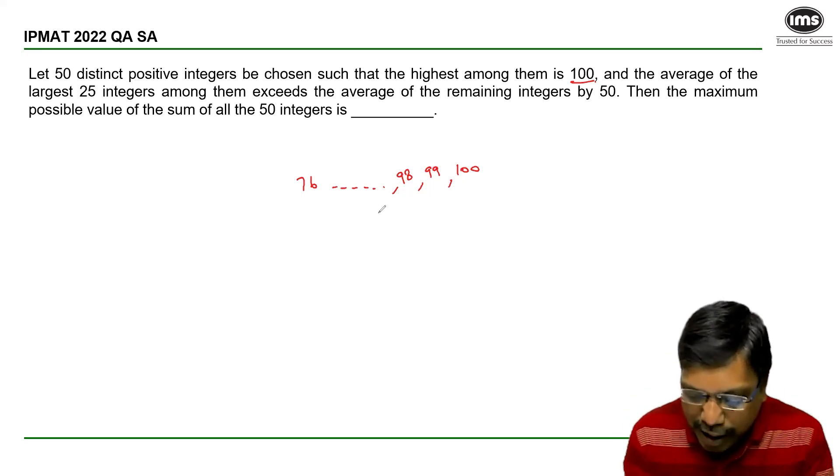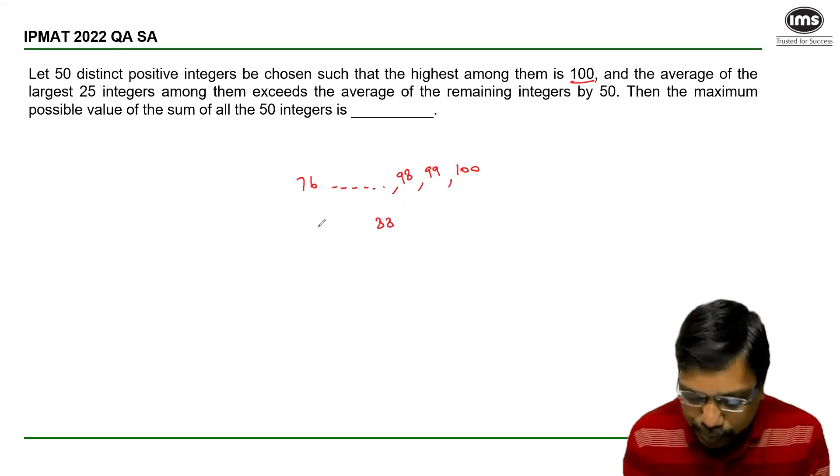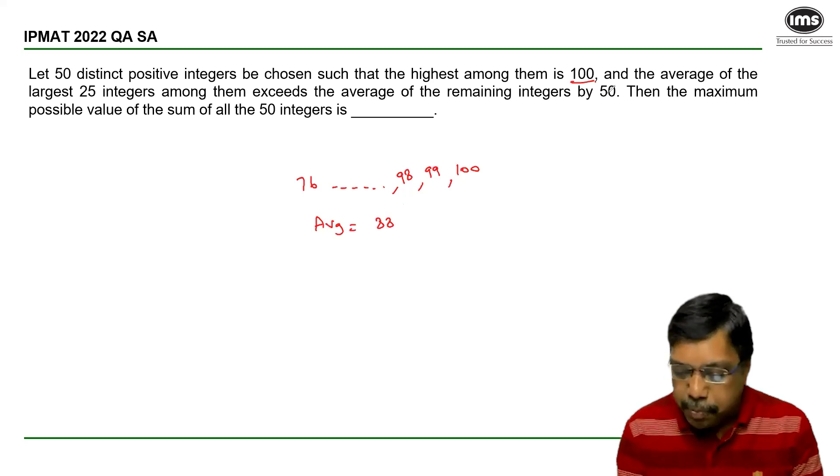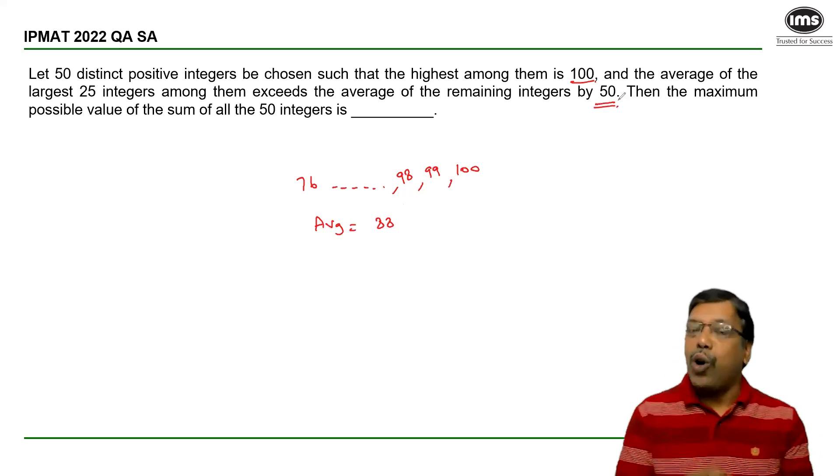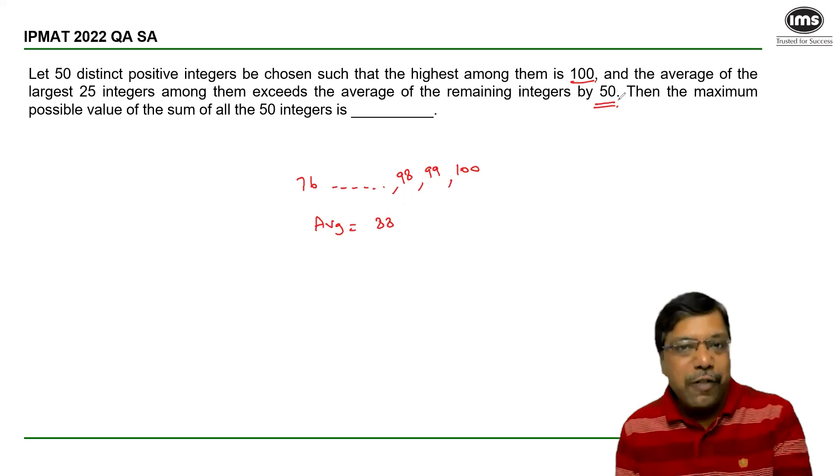The middle value out of these 25 integers is obviously the 13th integer. So the 88th number is the average, which indeed is 50 more than the average of the remaining 25 integers.